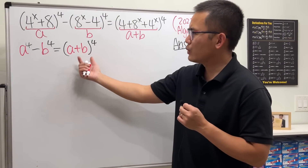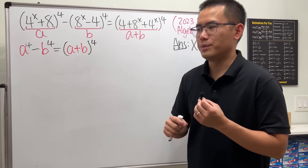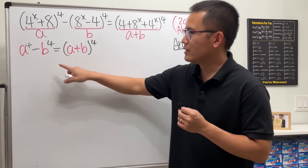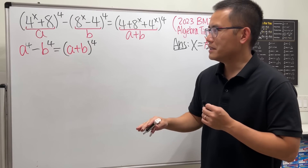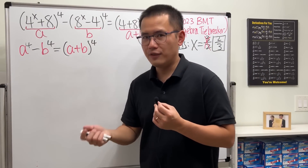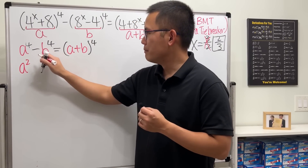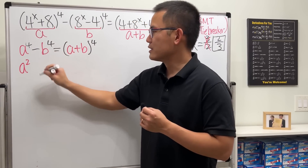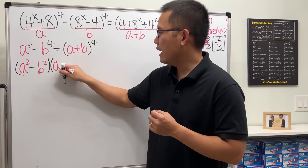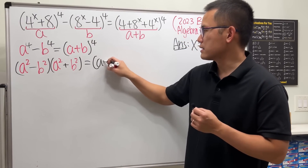Before we expand the right-hand side, notice we can actually factor the left-hand side. Expanding and canceling a to the fourth from both sides isn't clean. Instead, let's factor the left as a difference of two squares: a squared minus b squared, times a squared plus b squared. We'll keep the right-hand side as is.